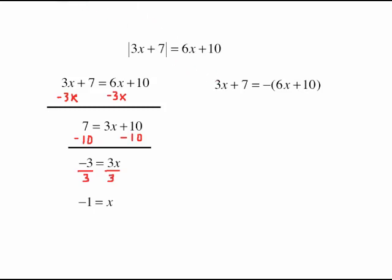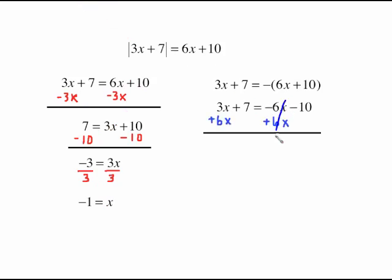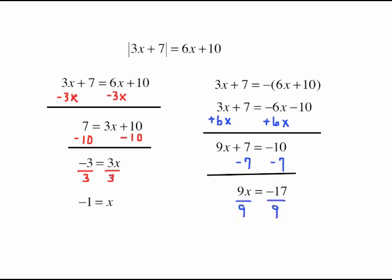The negative case requires a bit more work. The negative in front of the parentheses tells us to change the sign on everything inside, so it becomes negative 6x minus 10. We get the x's to one side and numbers to the other — add 6x to both sides; that cancels, leaving 9x plus 7 equals negative 10. Subtract 7 from both sides; that cancels, giving 9x equals negative 17. Divide by 9 and our answer is x equals negative 17 ninths.